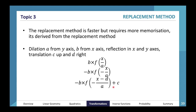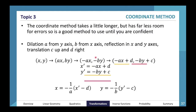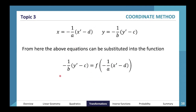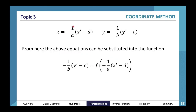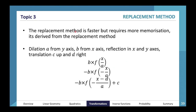The other way is the replacement method. I didn't like this one as much because it requires more memorization. It's derived from the coordinate method, but instead of doing everything manually, you just memorize the rules: a dilation by factor a from the y-axis means you apply one-over-a to x. The reflection of the x-axis and y-axis remain the same.